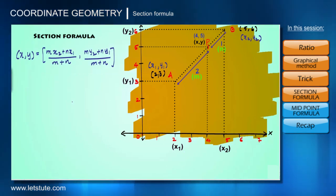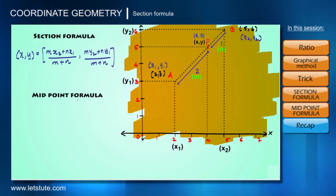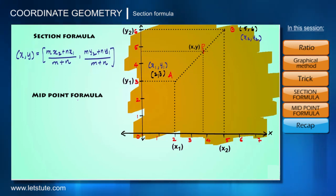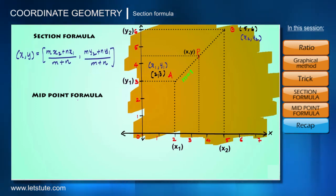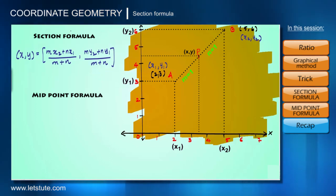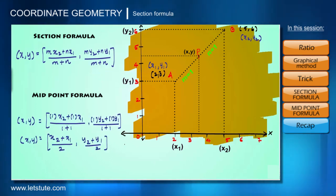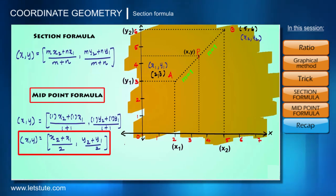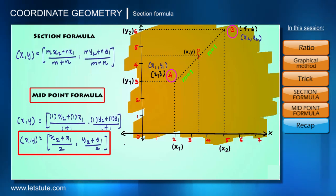From the section formula we can derive one more formula called the midpoint formula. This helps us find the midpoint of the line joining two given points. In the same example, if point P is in the middle of A and B, the ratio automatically becomes 1:1, so M equals 1 and N equals 1. Substituting M = 1 and N = 1 into the section formula, we get X = (X2 + X1) / 2 and Y = (Y2 + Y1) / 2. This is the midpoint formula, which gives the coordinates of the midpoint of the line joining the two given points.